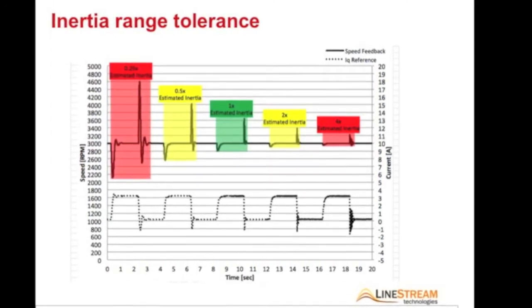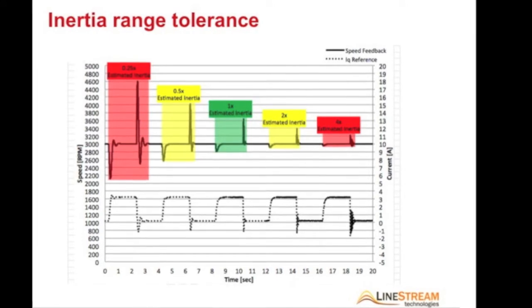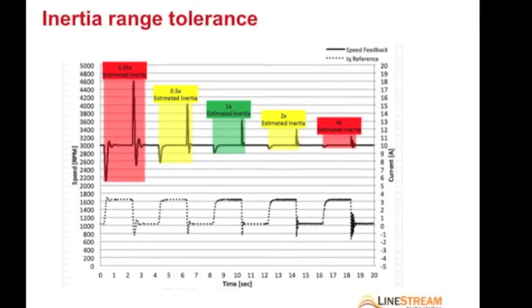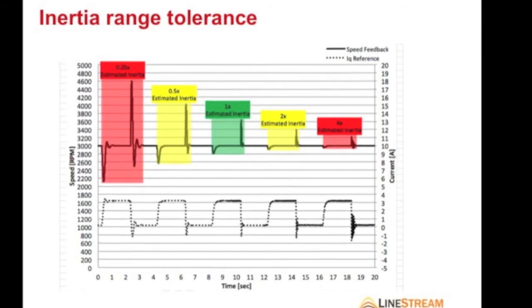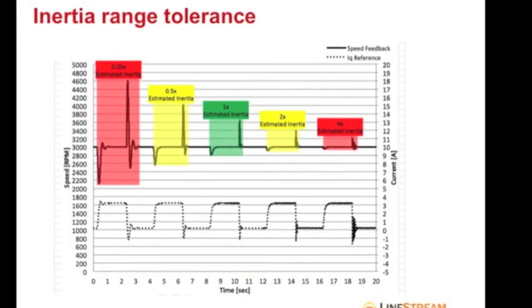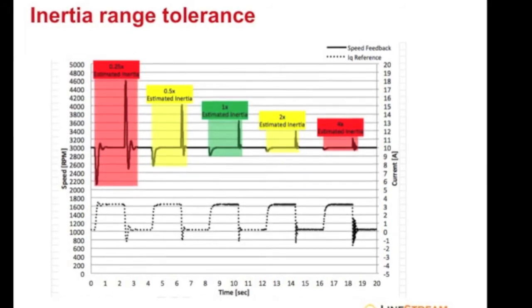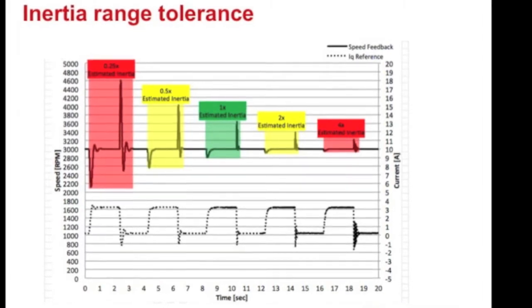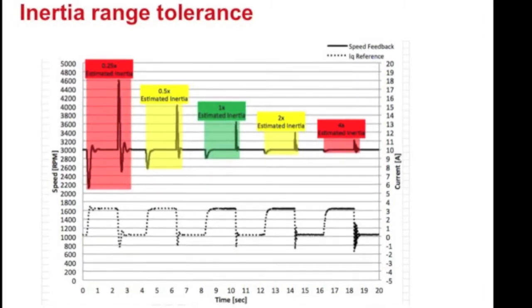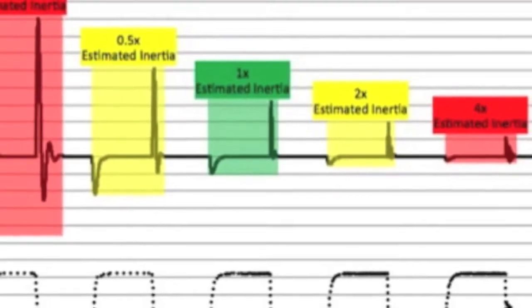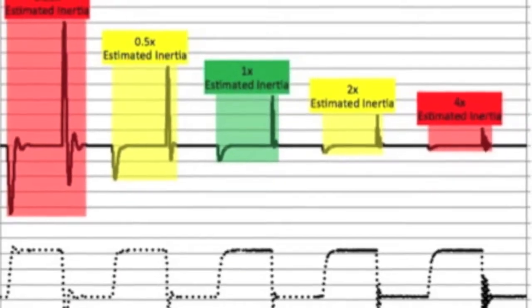The diagram compares the performance of ADRC with a range of wrong inertia settings. This was tested by applying the torque disturbance to a motor system. The inertia value provided to the ADRC controller was set to different values to highlight the range of inertia error that can be tolerated by the controller. This shows that the controller can tolerate an inertia mismatch of up to eight times.